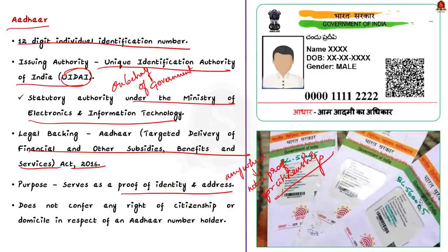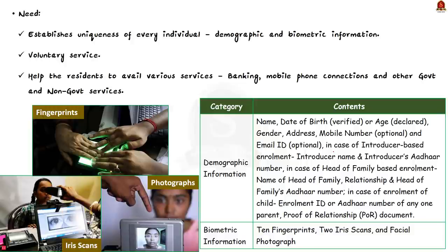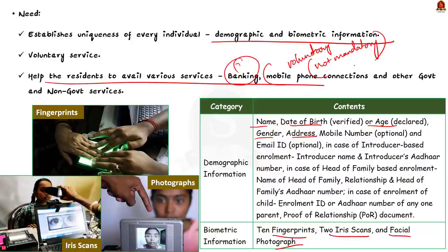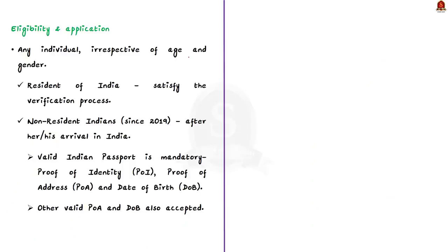Aadhaar establishes the uniqueness of every individual based on demographic information (name, date of birth, age, address) and biometric information (fingerprints, iris scans, facial photograph). Aadhaar is a voluntary service that every resident can avail, irrespective of present documentation — the Supreme Court reiterated it cannot be made mandatory. It helps residents avail various services provided by banking, mobile number connections, and other government and non-government services.